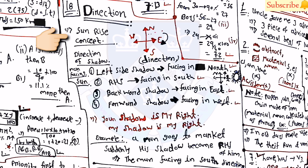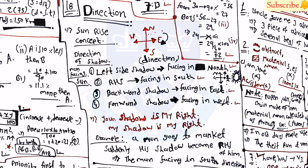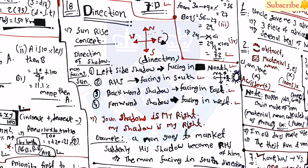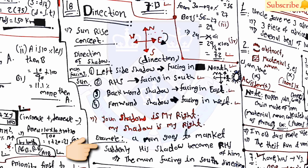Topic 18 covers directions using the sunrise concept. Key notes: if the shadow is on the left side, the person is facing north; if on the right, facing south; if the shadow is behind, facing east; if the shadow is in front, facing west. Remember: your shadow is to your right. Example: if a man going to the market suddenly has his shadow on his right side, he is facing south.